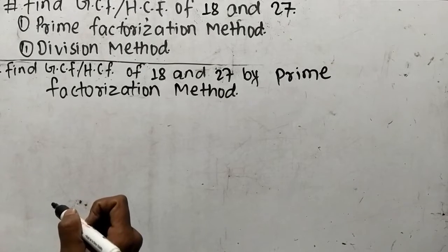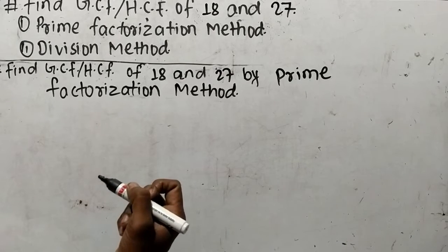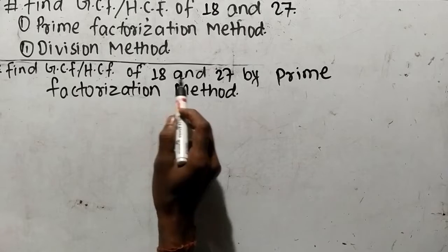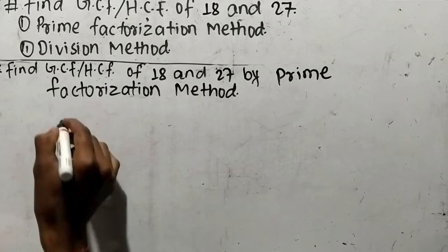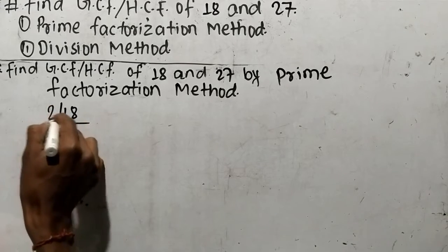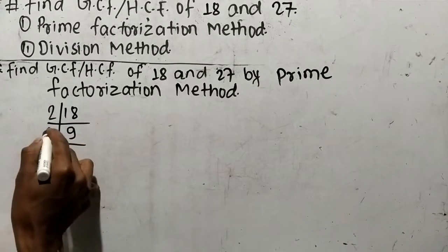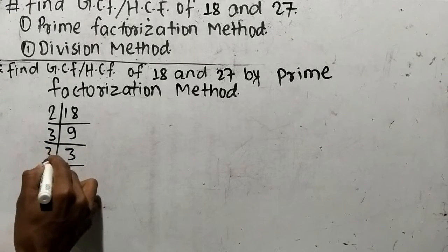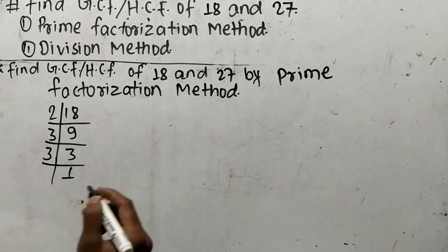While finding GCF or HCF by prime factorization method, first of all you have to find out the prime factors of the given numbers. Our numbers are 18 and 27. Let's find out the prime factors of 18: it is 2 times 9, which equals 18, and 3 times 3 equals 9.